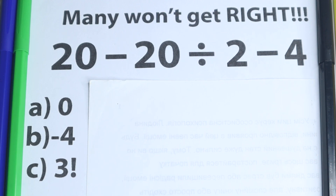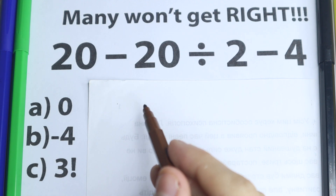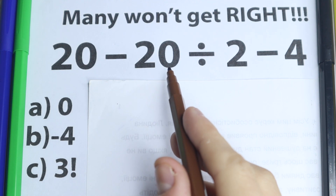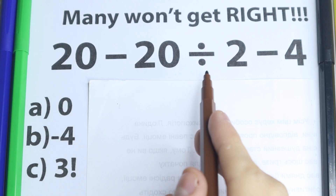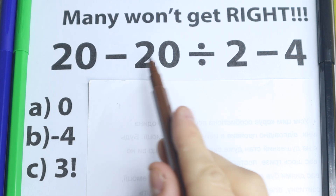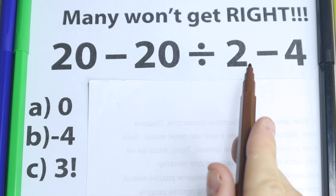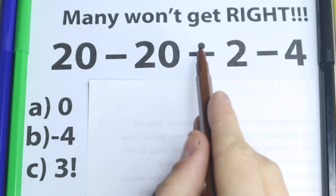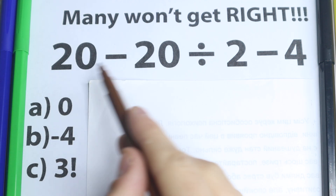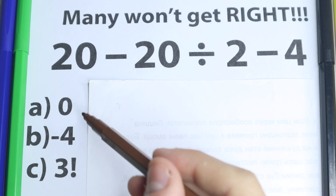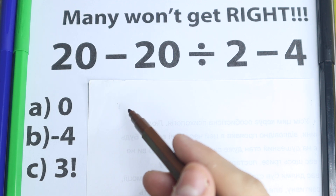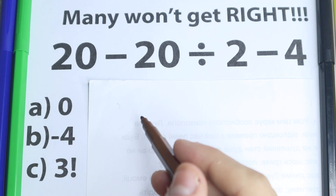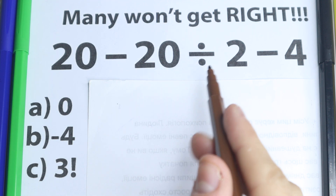Hello everyone, happy to see you here and welcome back to my channel BrainLogic. Really interesting, relaxing question today. We have 20 minus 20 divided by 2 and minus 4. Very easy question on the first side — everyone knows about the subtraction sign and division sign. We have two subtraction signs and one division sign. On the left hand side we have options A, B and C. I suggest you pause the video and try to solve it by yourself — it will be really interesting to check our answers.